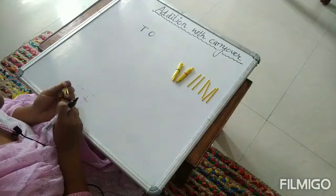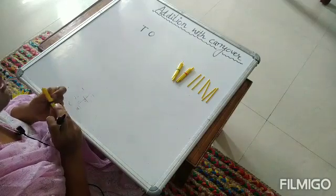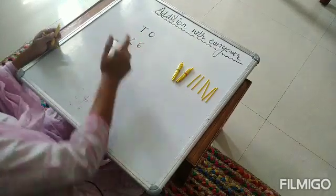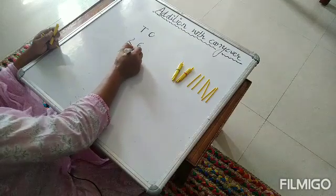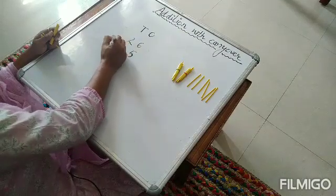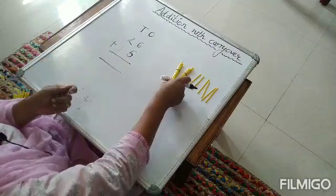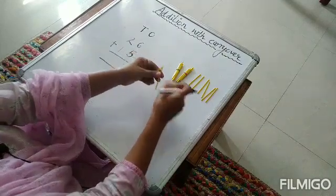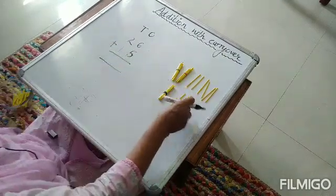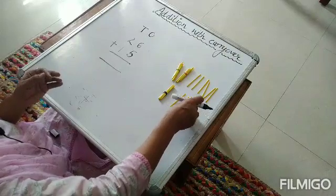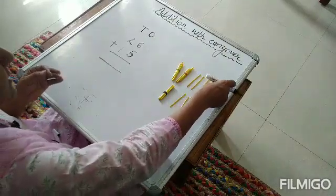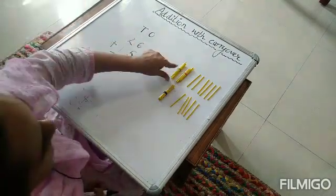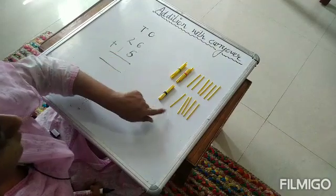So now I am going to take 15 more sticks. First I am taking 26. Now I am taking 15 more. So we are going to count them. For 15, 1 ten and 5 loose sticks: 1, 2, 3, 4, 5. So you can see now there are 26 sticks.